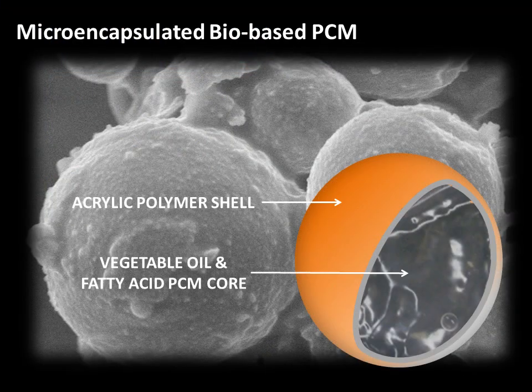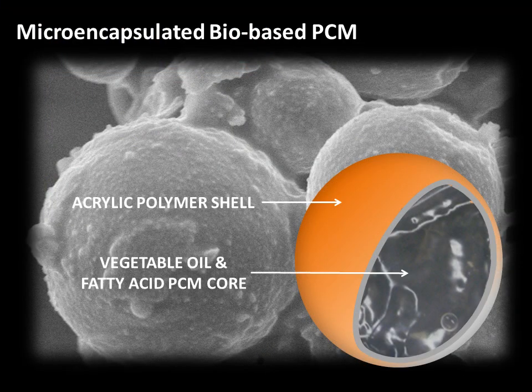The phase change material is a composition of vegetable oils and fatty acids which are micro-encapsulated within an acrylic polymer shell that are embedded within the ceiling tile.